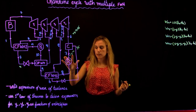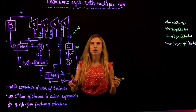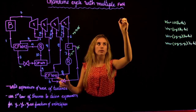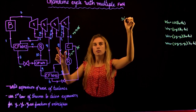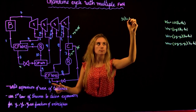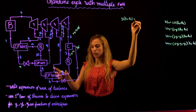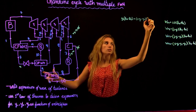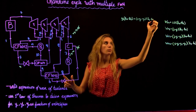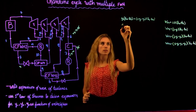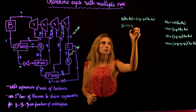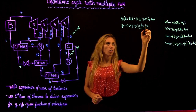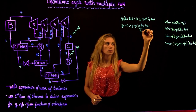Since we don't have any other split until state 8, we know the mass fraction remains the same. Therefore, writing the energy equation for the first cross feed water heater: Y3 times (H5 minus HB) equals 1 minus Y1 minus Y2 times (H9 minus H8). Solving for Y3: Y3 equals (1 minus Y1 minus Y2) times (H9 minus H8) over (H5 minus HB).